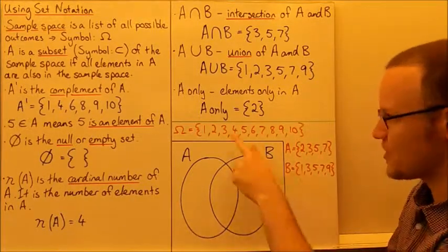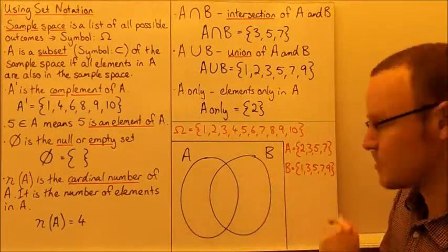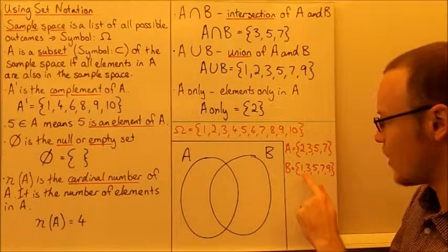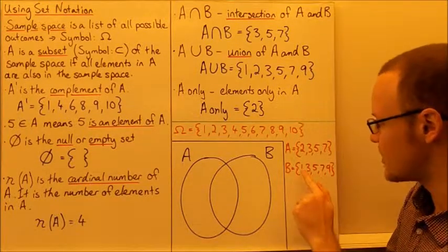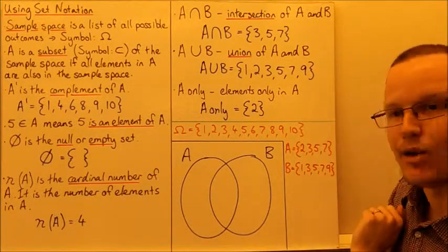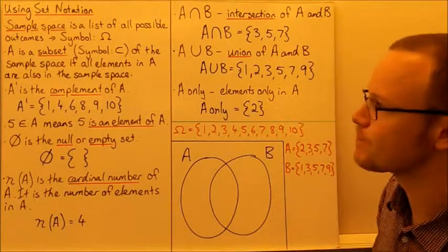B is also a subset of the sample space, but it's the odd numbers from 1 to 10: 1, 3, 5, 7, and 9 — they're all the odd numbers.